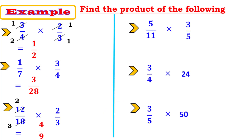Next: 5 over 11 times 3 over 5. Cancel the 5 directly: divided by 5 equals 1, divided by 5 equals 1. Multiply the remaining factors: 1 times 3 equals 3, and 11 times 1 equals 11. The product is 3 over 11.